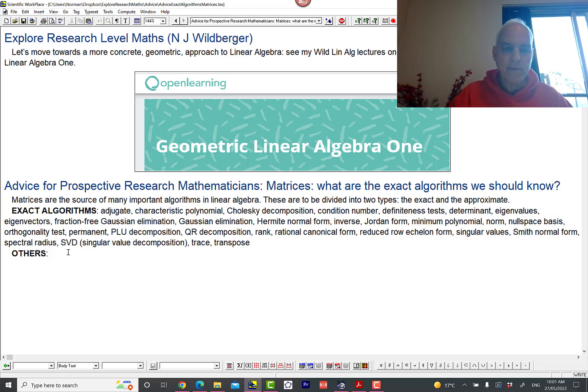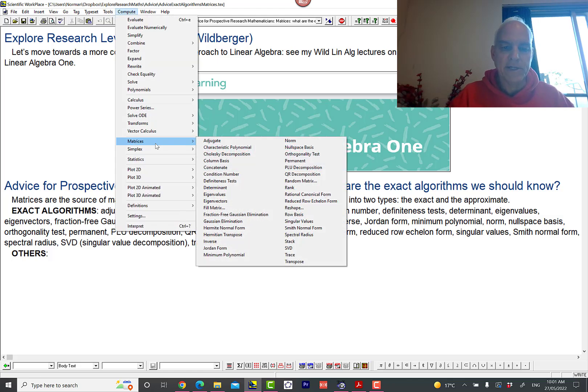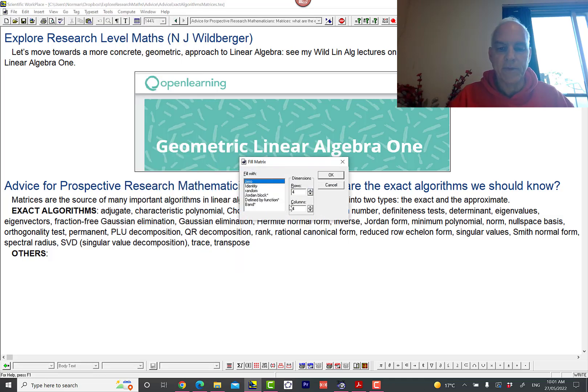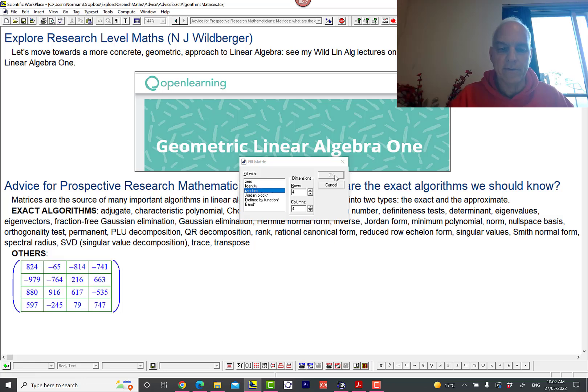Okay, so let us start by creating a matrix. I'm going to go to matrices here in Scientific Workplace. There's a list of the various algorithms that deal with matrices. We're going to look at most of them but not all of them. First thing we're going to do is get a matrix—a 4x4 matrix sounds good, maybe one with random entries.